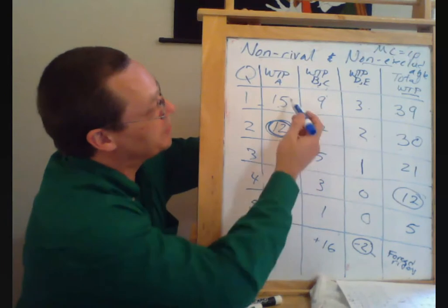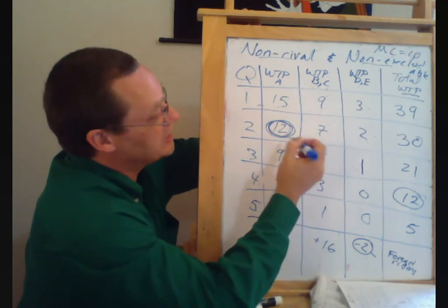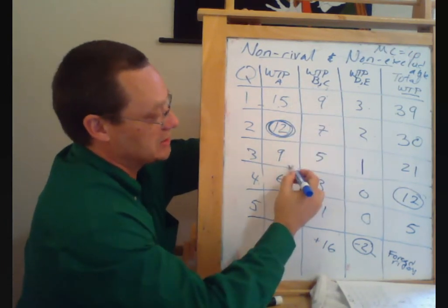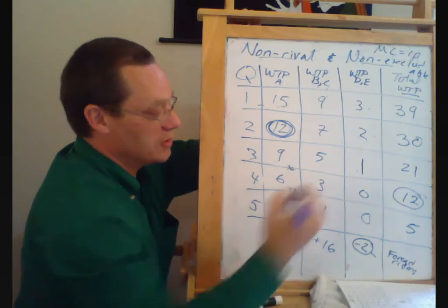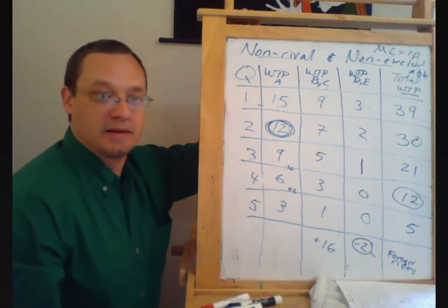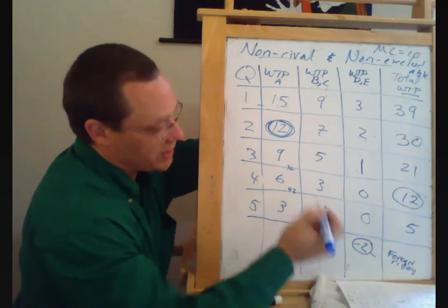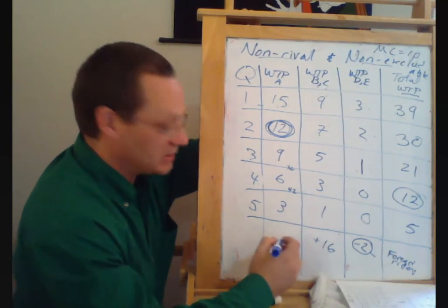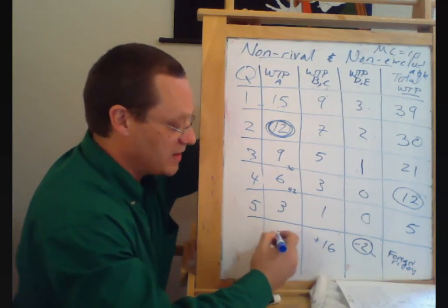And then person A, $15, $27, $36, $42. If I'm doing my math right, this person gets $42 minus $8, gets us $34 of net benefits.